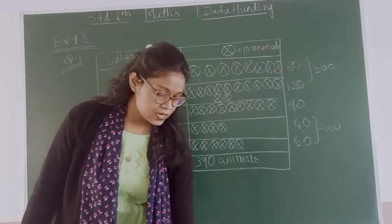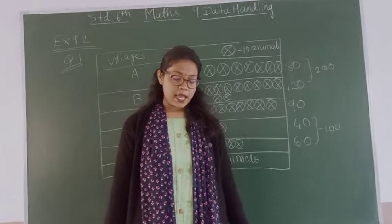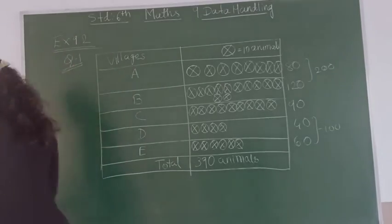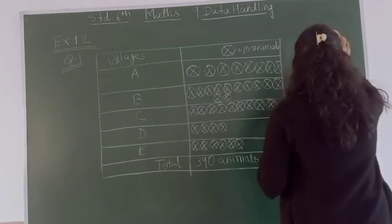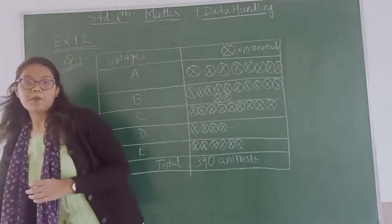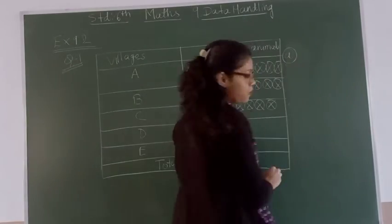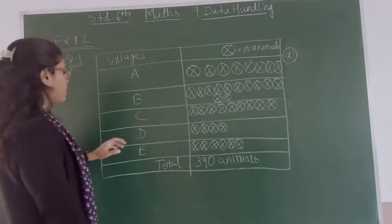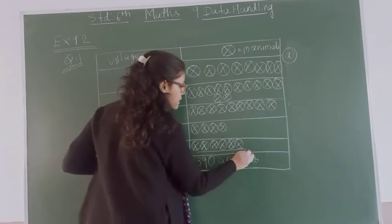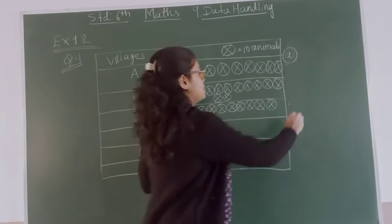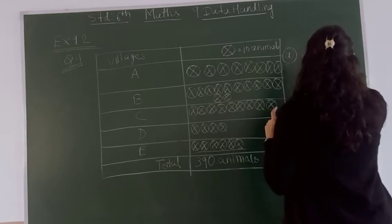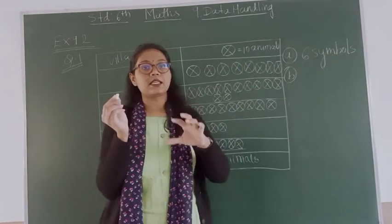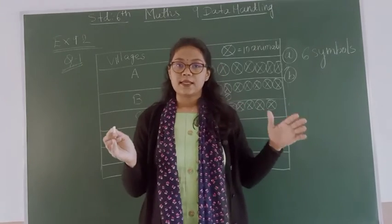Now let's go back to answer the questions. How many symbols represent animals of village E? Village E has 60 animals, so 6 symbols. You have to just give the answer in one word, not write it in long sentences.